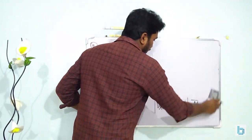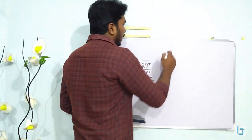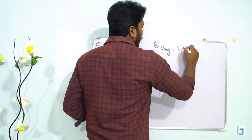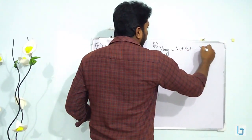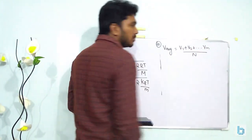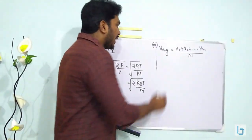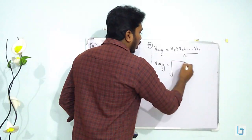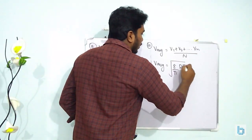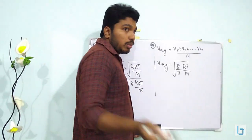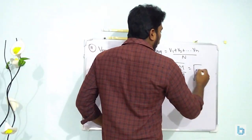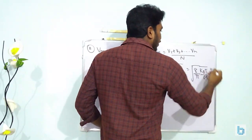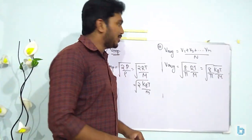The third type is average speed Vavg = (V1 + V2 + ... + VN)/N = √(8/π × RT/M) = √(8/π × P/ρ) = √(8/π × kBT/m). Remember all equations corresponding to these three velocities that a gas molecule can have: RMS velocity, most probable velocity, and average velocity.